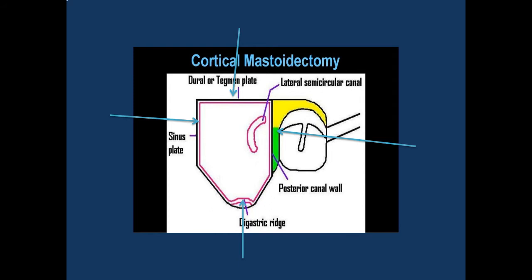I repeat: in front is the posterior superior bony meatal wall; above is the tegmen plate; behind is the sinus plate; below is the digastric ridge — the limits of cortical mastoidectomy.